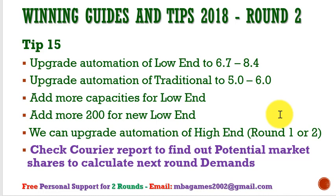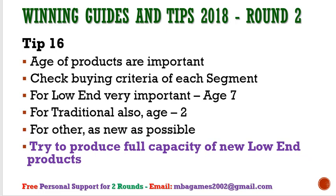Tip 15: Update automation for low-end from 6.5 to 8 this round; next round update to 9 or 10 — 10 is optimal, 9 is okay. Update automation for traditional from 5 to 6. Leave other segments for later rounds due to investment limitations. In Round 3, add about 300 more capacity for traditional and 300 for low-end. Check the courier report to find potential market share and calculate next-round demand — multiply units sold from last round by the segment growth rate, then minus inventory.